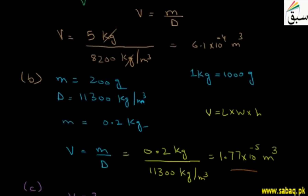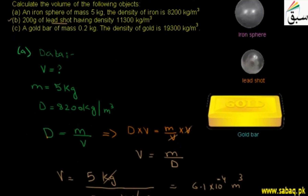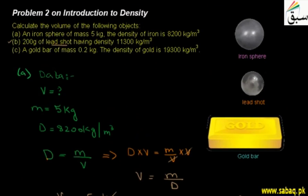Students, you can see that in all three cases we have found the volumes — of the iron sphere, the lead shot, and the gold bar — by calculating using the density formula.